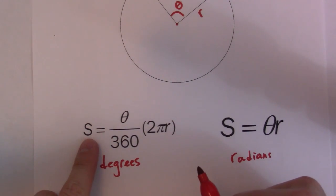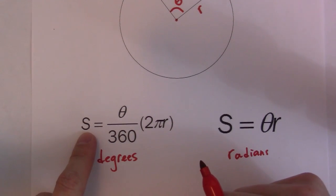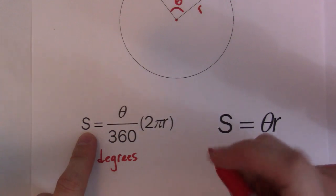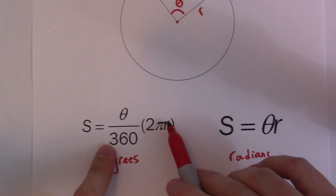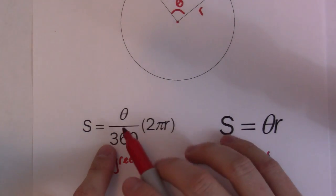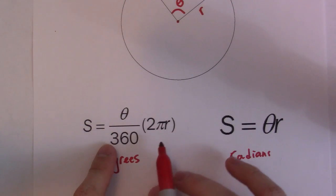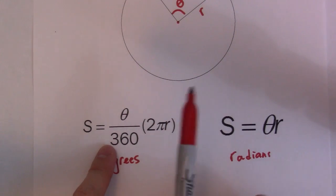So the symbol for arc length is S. So you end up with theta divided by 360 degrees times 2 pi r, and then that theta again, that has to be in degrees. The radius can be in any units, it doesn't matter, centimeters, meters, whatever.